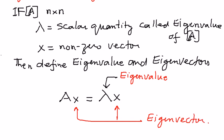So to explain it some more, if A is an n by n matrix, and if lambda is a scalar quantity called the eigenvector of matrix A, and if x is a non-zero vector, then we can define the eigenvalue and eigenvector by this equation: A x equals lambda x, where lambda is called the eigenvalue, and the x's here in this equation are called the eigenvectors.